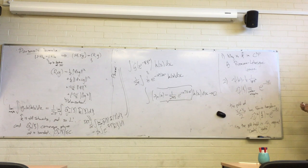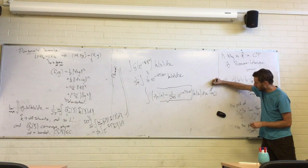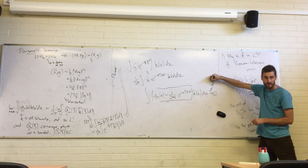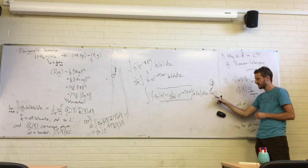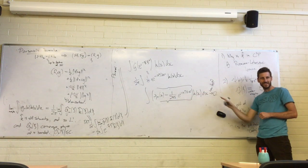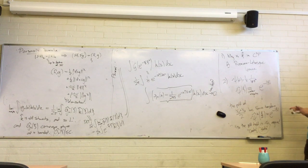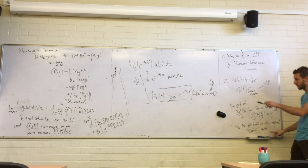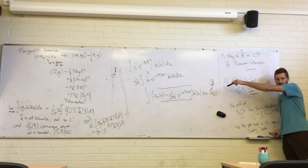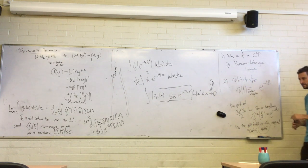There are also lovely theorems that tell you how fast this convergence is, which matters a lot in applications — you care whether it takes two steps of averaging or a million before you get something that looks like a Gaussian. This might be a good topic for a statistically-minded essay project.